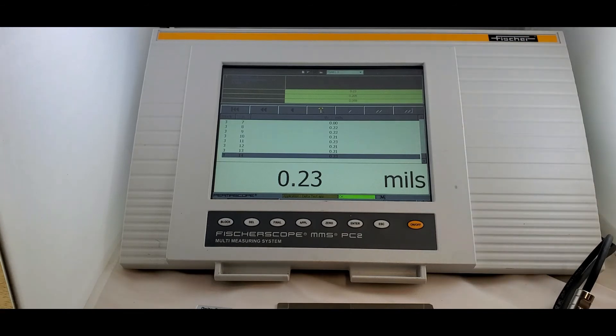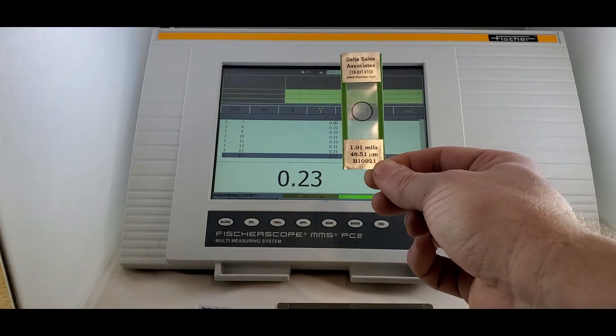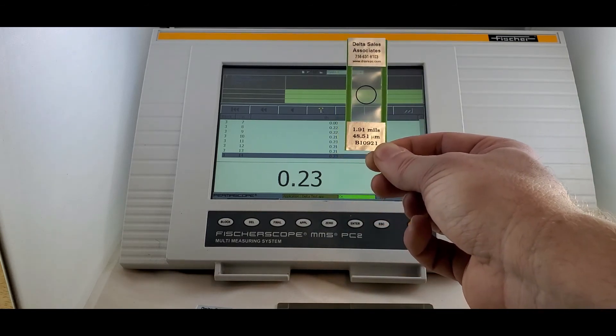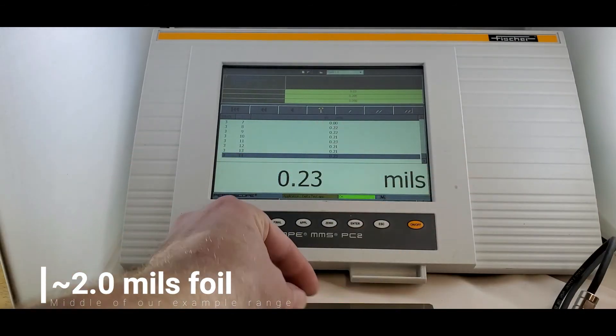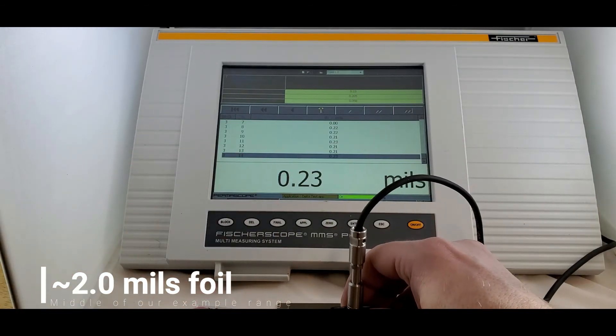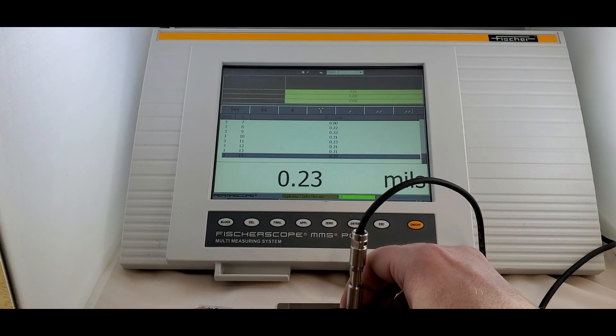So now in theory, we are calibrated, but we want to make sure. And now this is a very good way to do a daily verification. We are going to take a foil that is now right in the middle of our range. So I'm just going to take a couple of measurements on this to make sure that our calibration was correct.